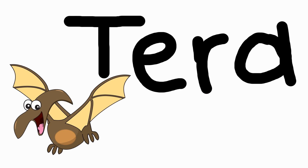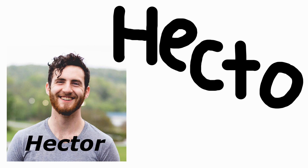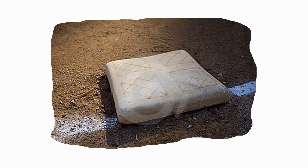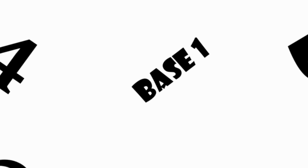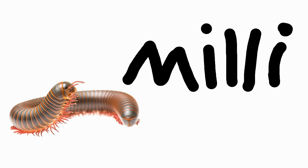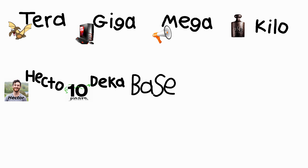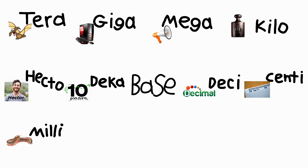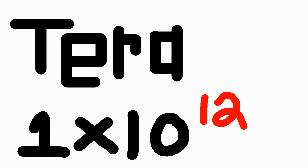Tera, Giga, Mega, Kilo, Hecto, Deca, Base one — it's always base, base one is always the one. Desi, Centi, Milli, Micro, Nano. That is all the prefixes you need to know right now.